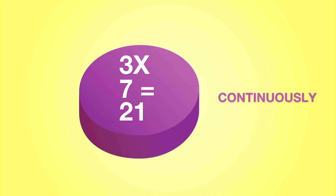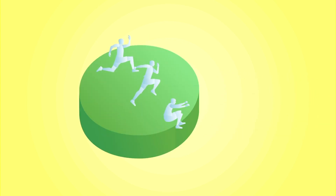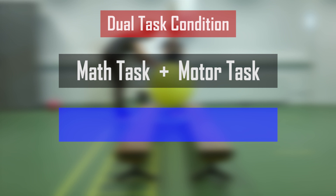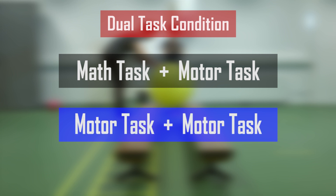If you first do the math and then the motor task, it's not a dual task. Combining a math and a motor task is a standardized way of how to create a dual task condition. However, it is also possible to create a dual task in combination with a secondary motor task. In that case, you have to take care that the secondary task does not interfere with the primary motor task. Let's see what this looks like in practice.